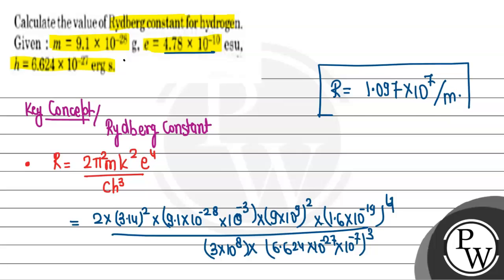This is the value of Rydberg constant. Per meter means this much amount of wave is passing in a meter distance. The Rydberg constant gives a value that tells how many waves can pass in one meter.